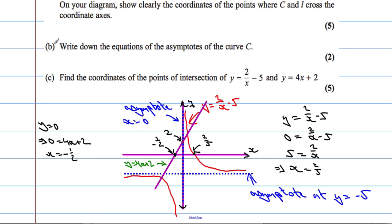Okay, and we've actually answered part B as well. Write down the equations of the asymptotes of the curve C. We've got an asymptote where x equals 0 and where y equals negative 5. So this is in fact part A and part B in one.